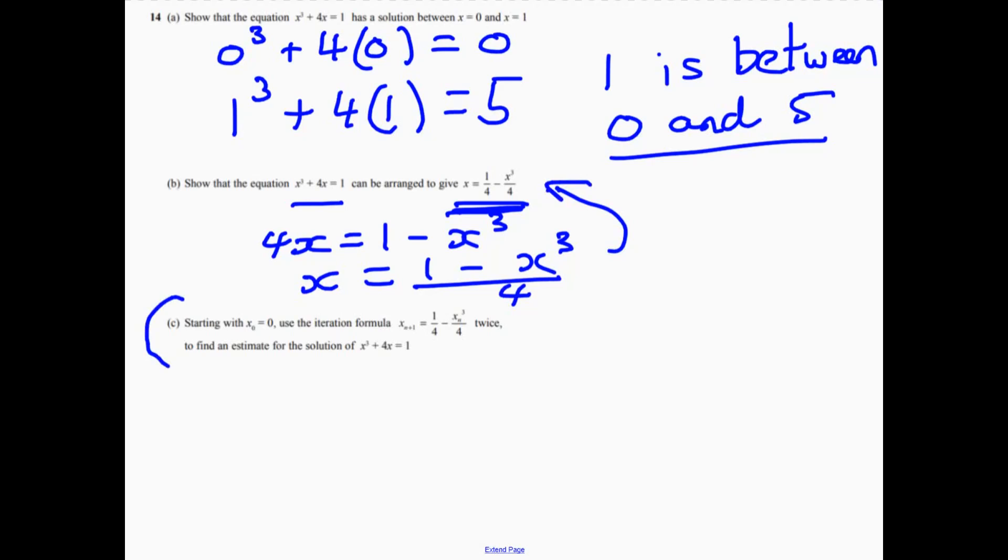Now part c. Now this looks, I always think these questions look really complicated. And actually, they're probably the easiest questions to do on the paper. So we know that x, the first term, is 0. And then the next term, all it is, is this. So the next term is a quarter. Take away. Now it just means the previous one. So 0 cubed over 4. And that's obviously going to equal a quarter.